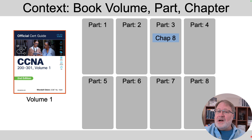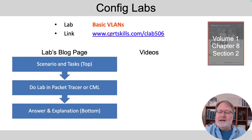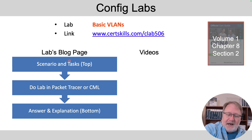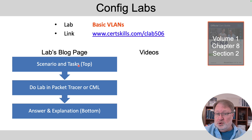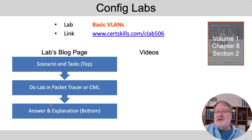This lab has to do with the same content you'll find in the CCNA Official Cert Guide Volume 1, Part 3, Chapter 8, and this lab is called Basic VLANs. Here's the direct link to the lab, and if you go to the blog page for that lab, at the top you'll see an introduction with scenario and tasks — basically what we want you to do. In the middle it briefly says to do the lab using Cisco Packet Tracer or Cisco Modeling Labs, and the bottom of the page has the answer and an explanation as to why that answer is correct.